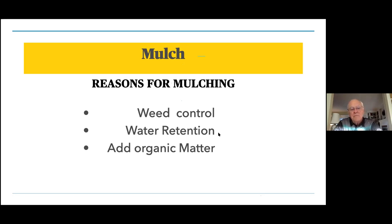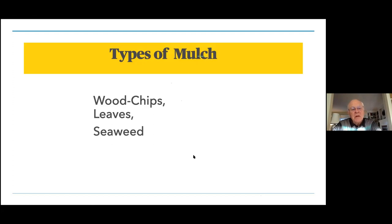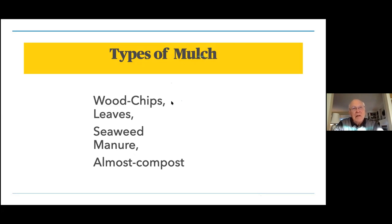Mulch provides water retention so you don't have to use as much water, and adds organic matter to the soil — very important. Types of mulch I use: wood chips, leaves, seaweed, manure, and almost-compost. Wood chips are predominant in large rose gardens such as at Ross Jones Duff House. Hardwood is best if you can get it; otherwise pine bark works. Wood chips last a year or more. You want pieces about an inch to an inch and a half. Leaves are also very good — I have an arrangement with a local gardener who dumps the leaves he picks up in people's yards in the woods not too far from my house, and I get them in summer to put around my roses. The leaves even come with worms.